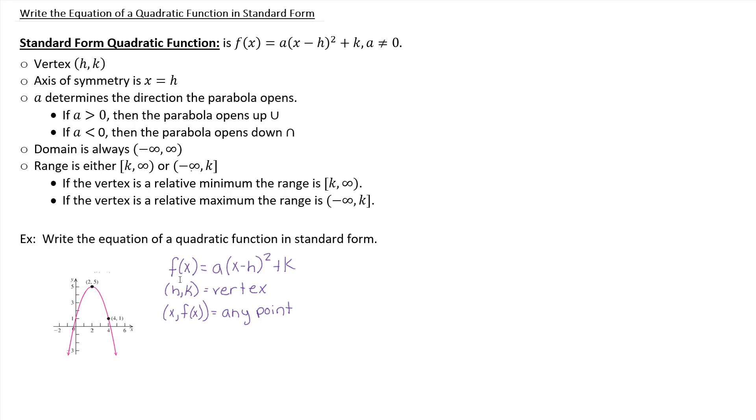So we, from the graph, don't necessarily know the exact value of a. That's unknown. So then, if my goal is to get f of x equals a times x minus h squared plus k filled in, then we need to fill in the pieces that we know.